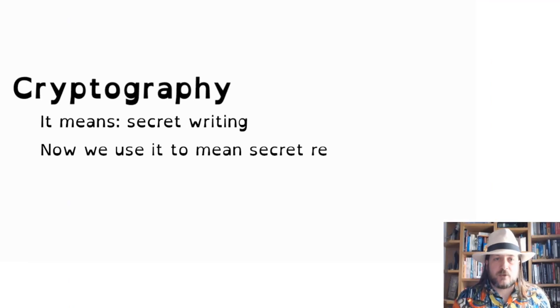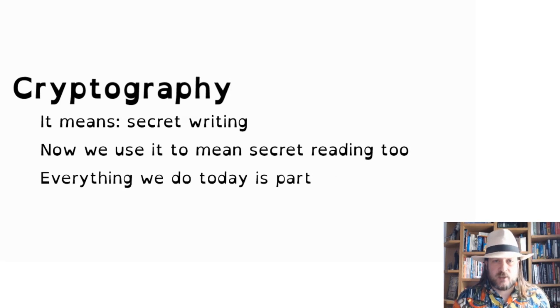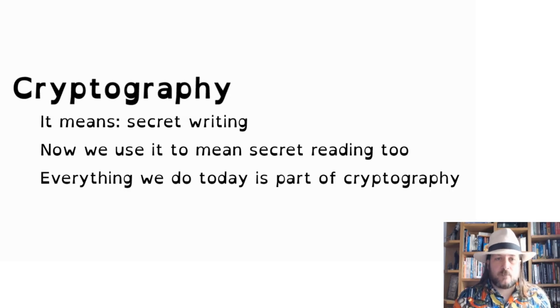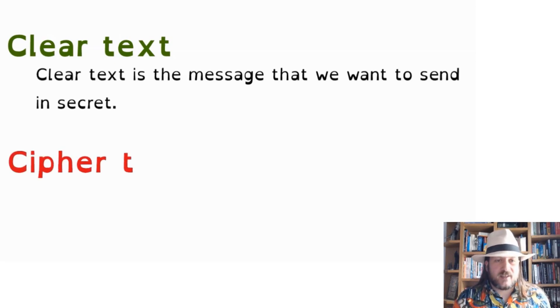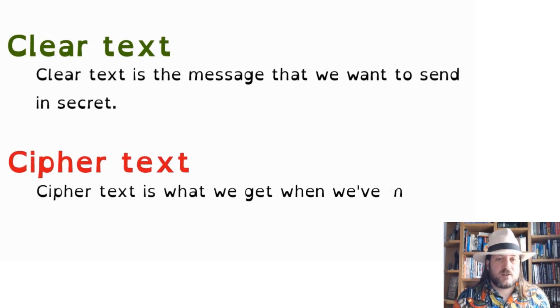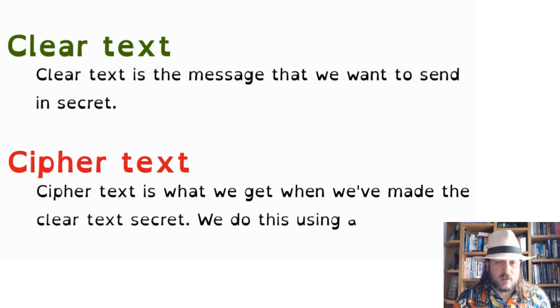The first word is cryptography, which means secret writing — we use it nowadays to mean secret reading as well. Everything we talk about today is part of what we call cryptography. The next two terms are clear text and cipher text. The clear text is the message we want to send in secret. A cipher is a way of making a message secret, so the cipher text is the message that we can send any way we want and still have it be secret.